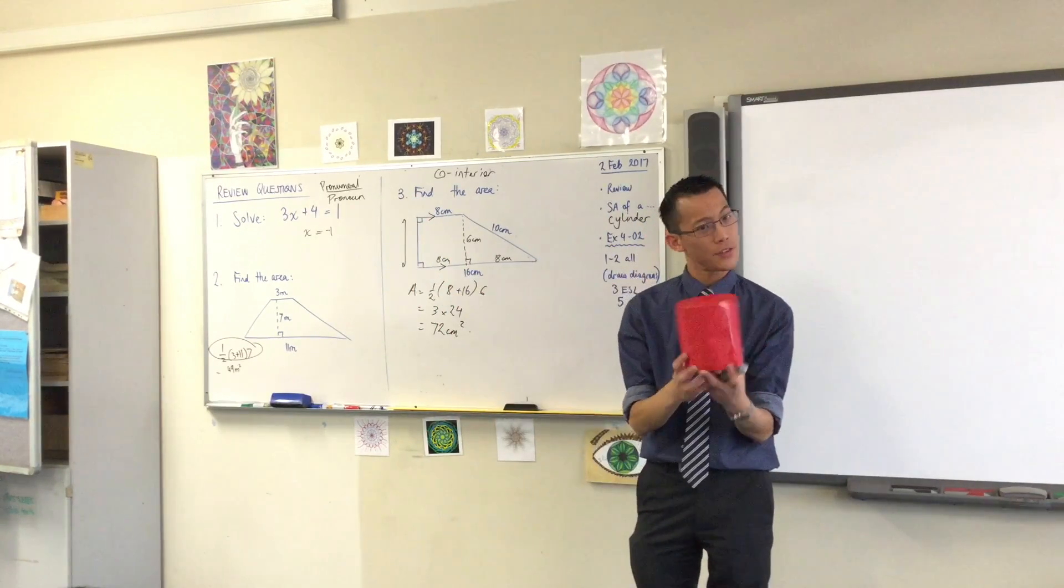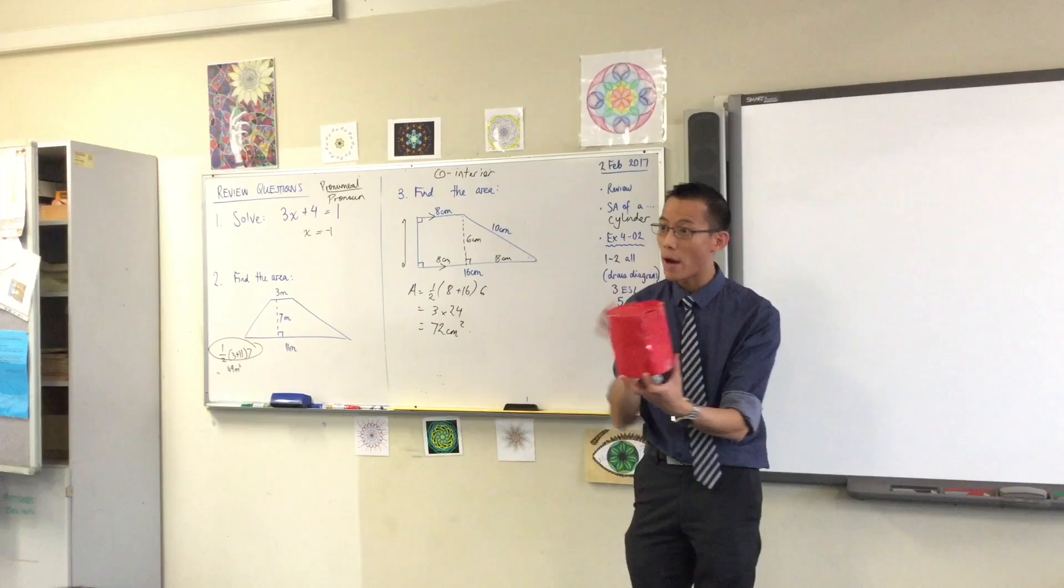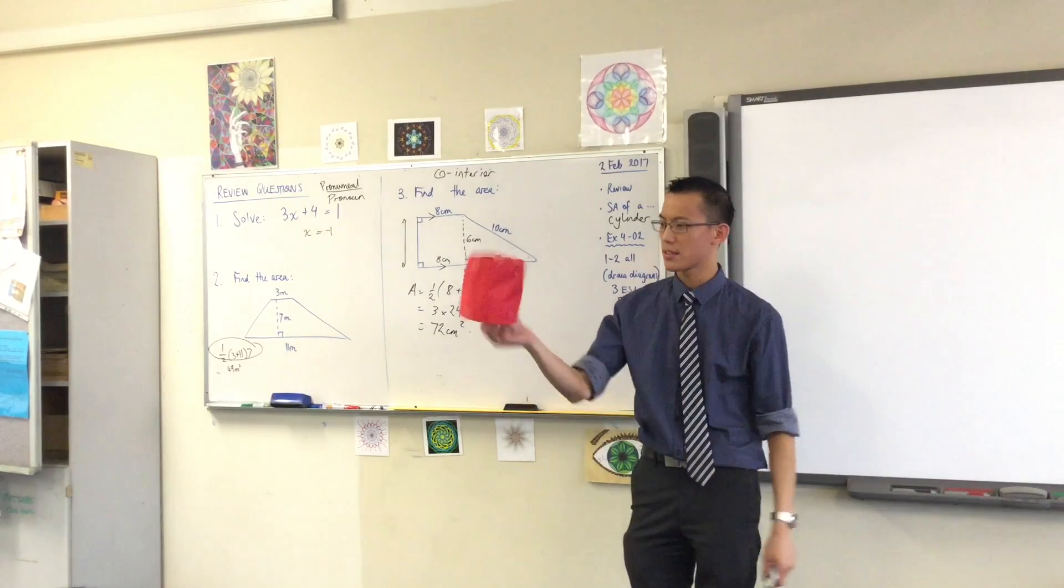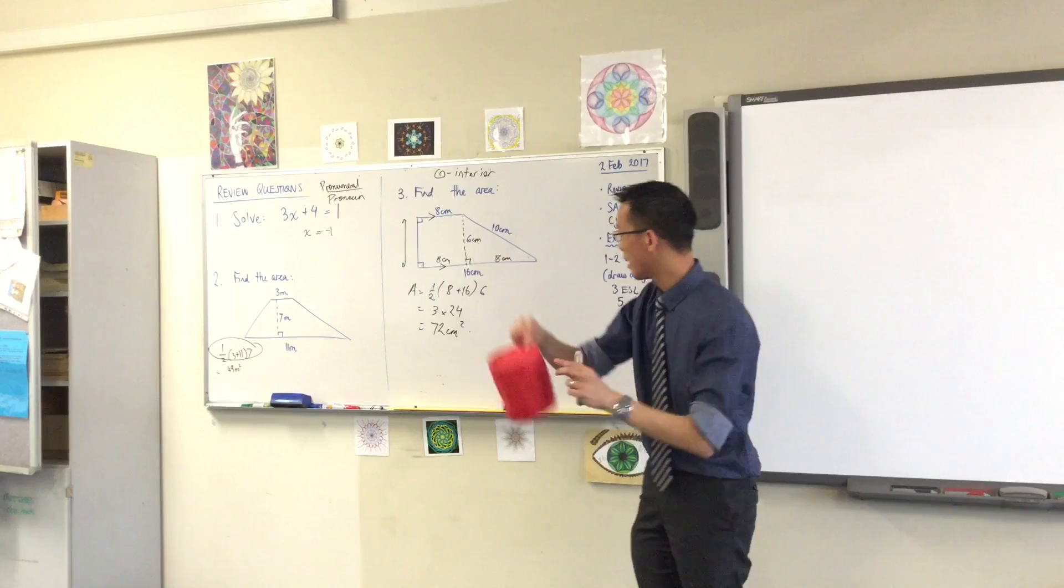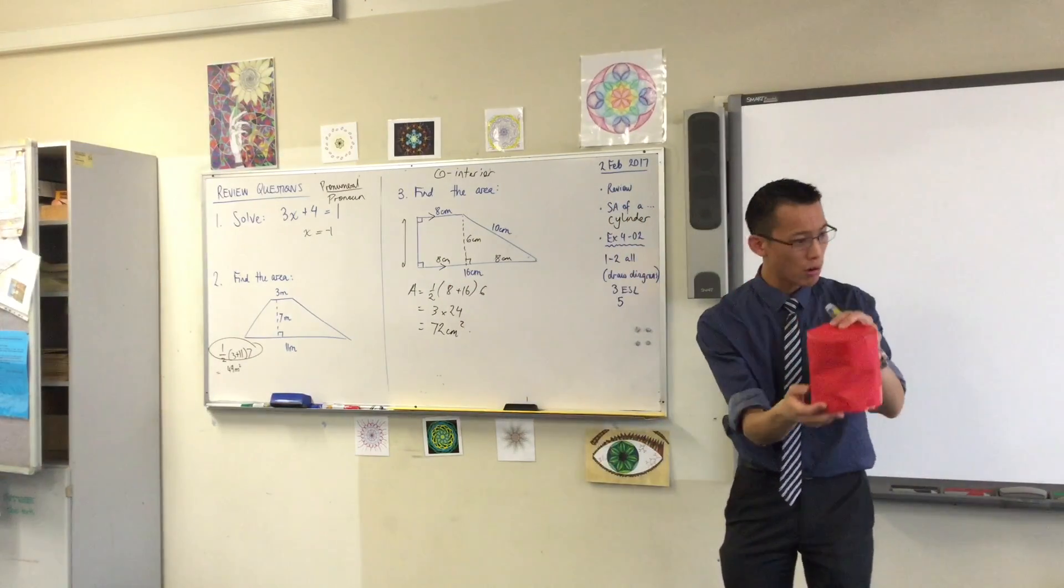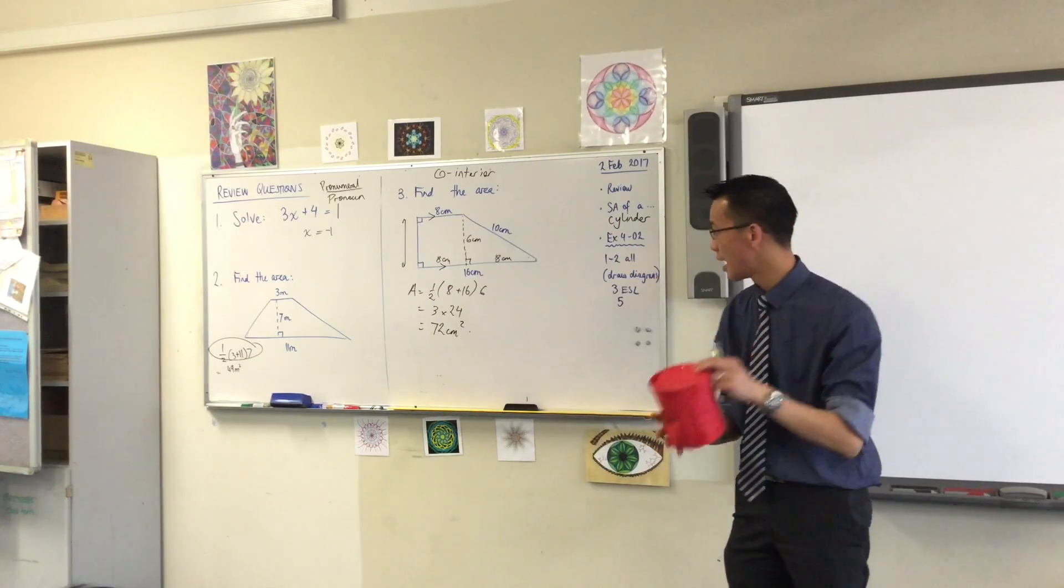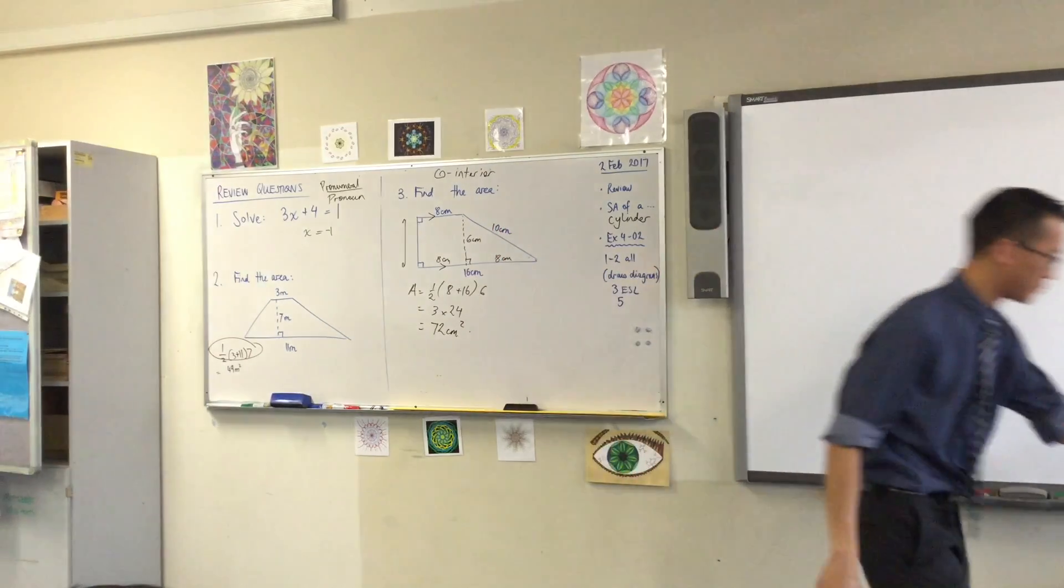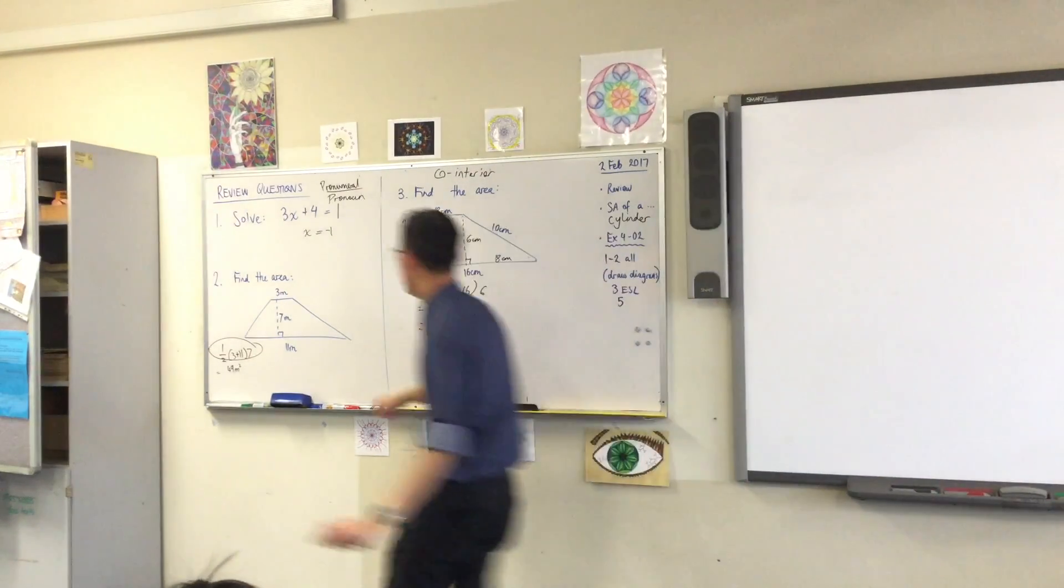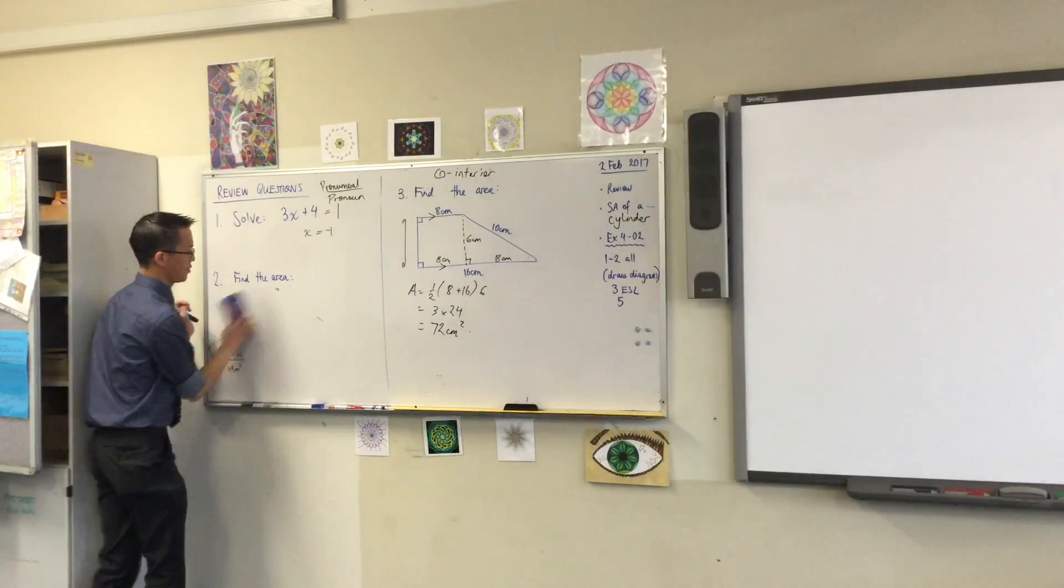Now if I want to work out the surface area of this thing that wraps all the way around, so basically that's how much paper did I use to make this thing. Does that make sense? So I want you to think for a second, draw a cylinder for yourself. Make sure it's a decent size. While you do that I'm going to make some space on the board and I want you to think about how you would do that. How would you work out how much paper you used?